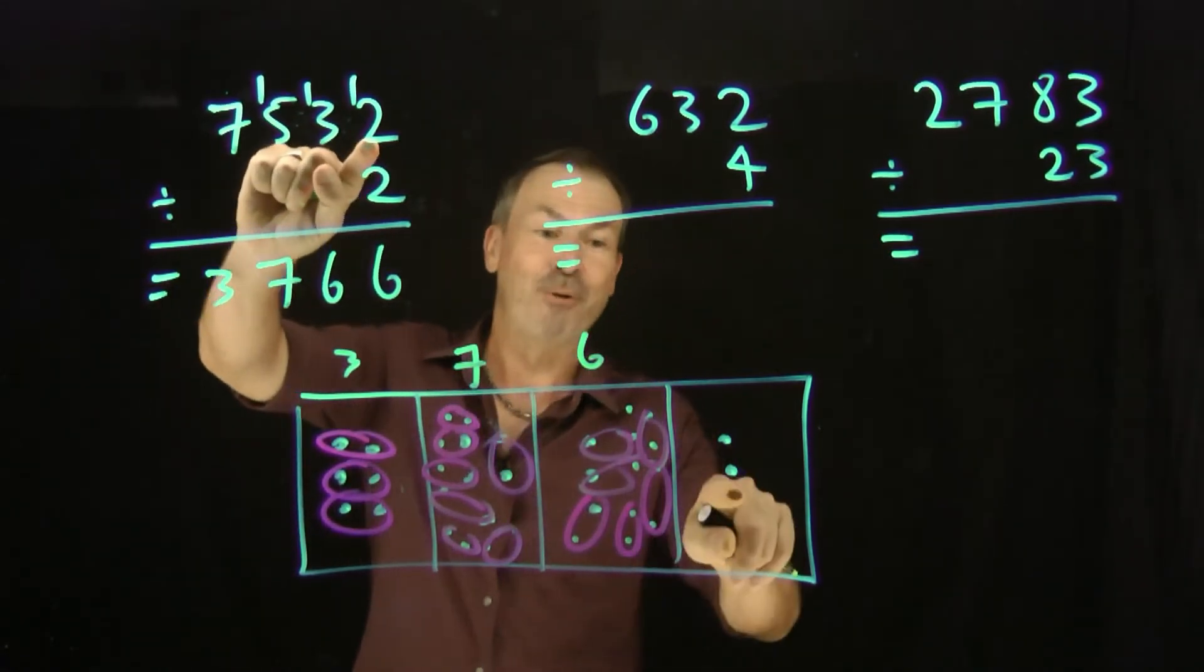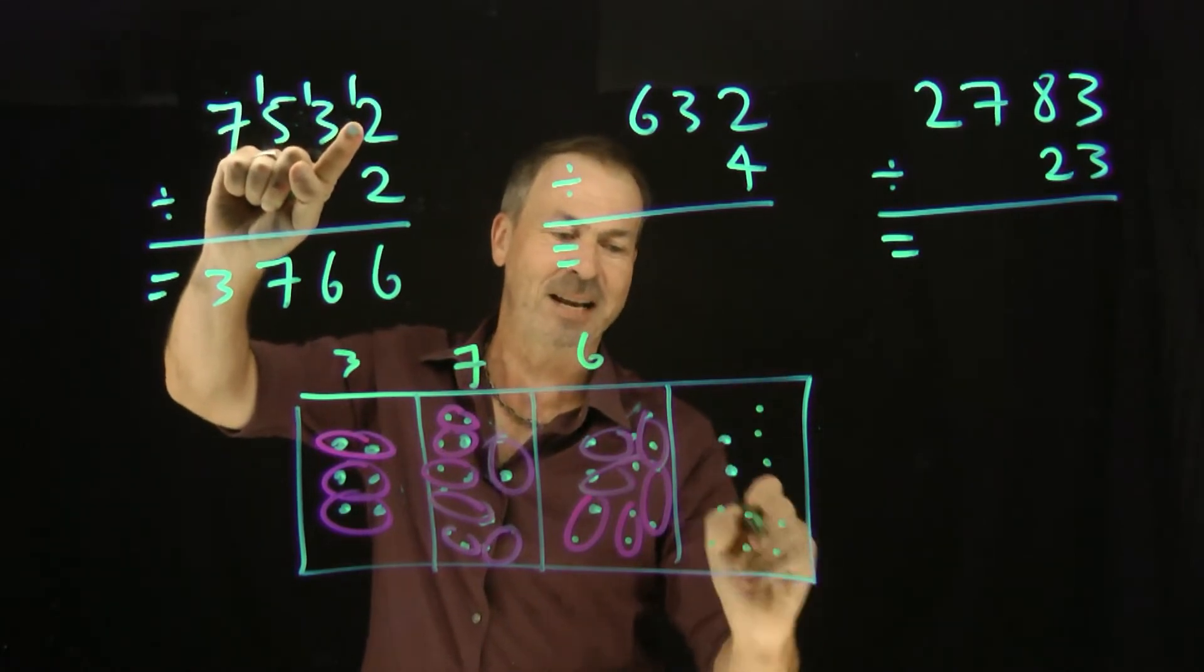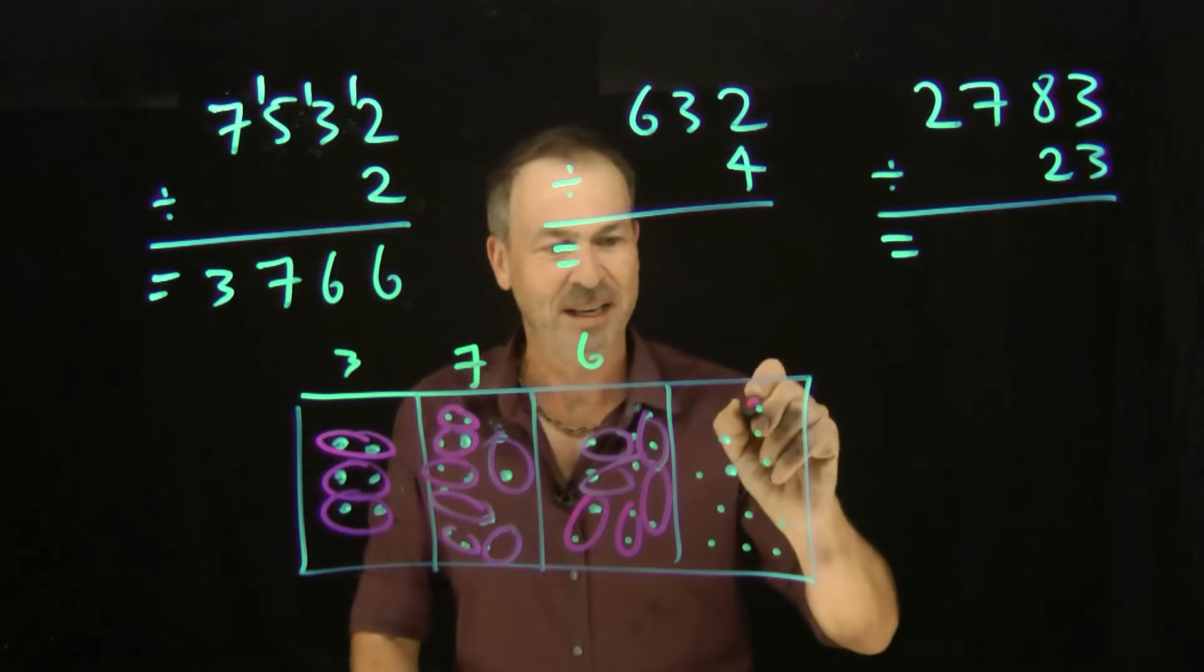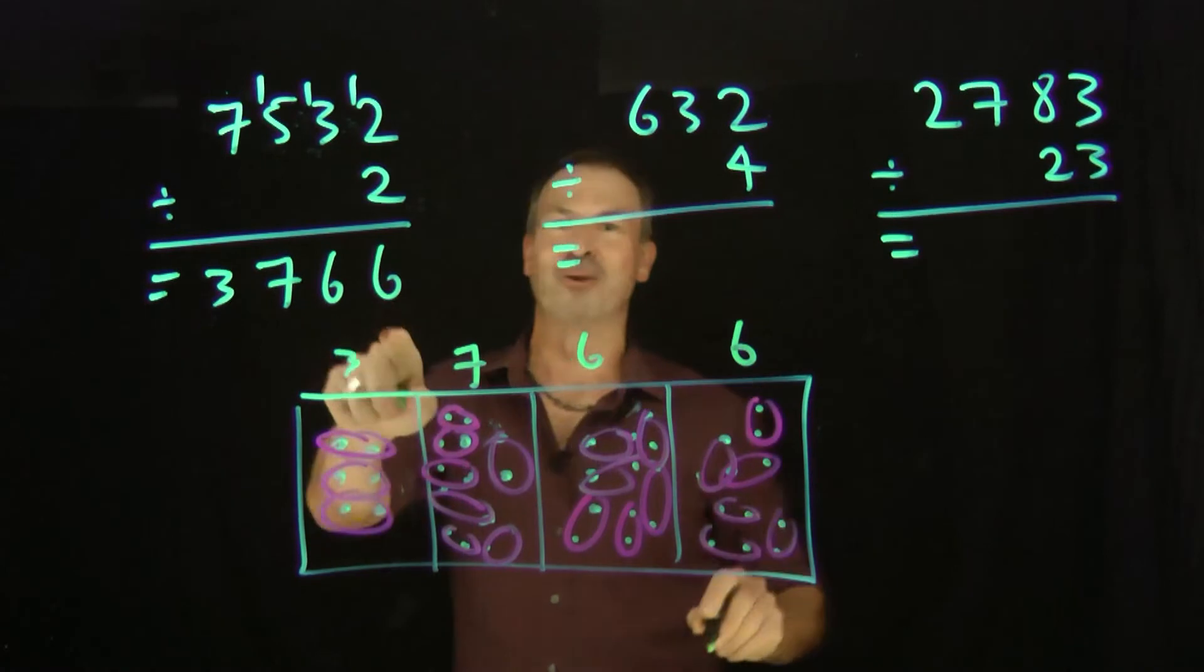While we do the extra 1, I'm going to bring it over to the 2 and turn that 2 into a 12. 1, 2, 3, 4, 5, 6, 7, 8, 9, 10. Beautiful. And how many groups of 2 do I see amongst 12? 6 of them. 1, 2, 3, 4, 5, 6. Beautiful, beautiful, beautiful. I even wrote that final 6.